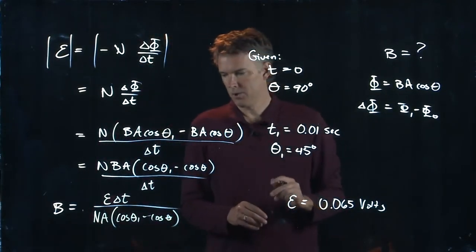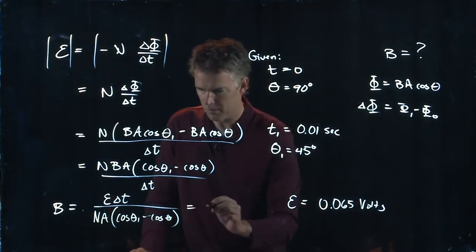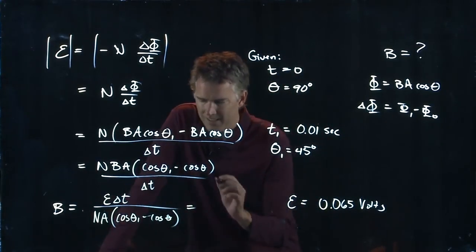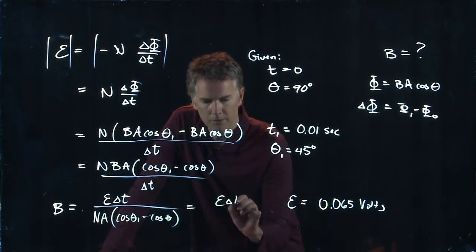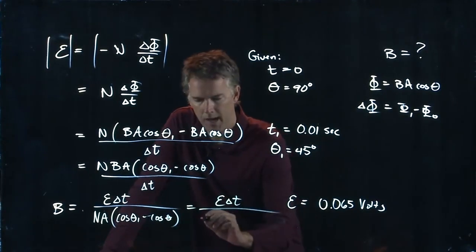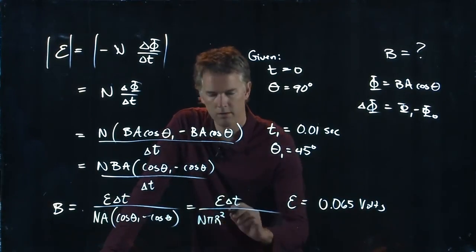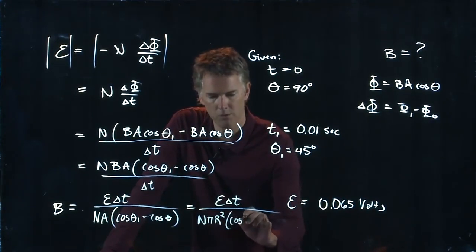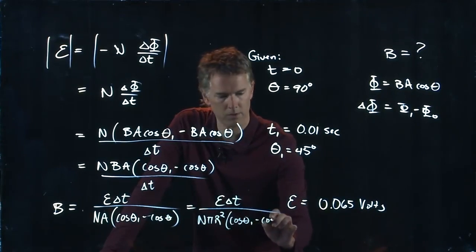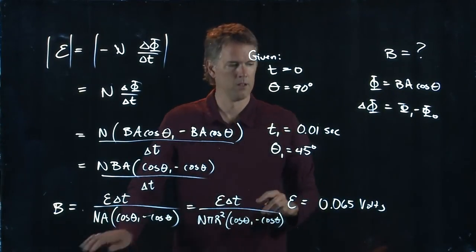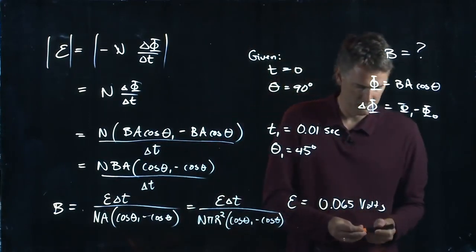And now we should have just about all those numbers, except it's a circular loop, right? So we need to put in for the area A. This is pi r squared for our area A, cosine theta one minus cosine of theta.